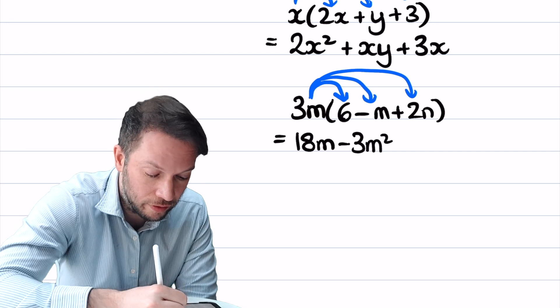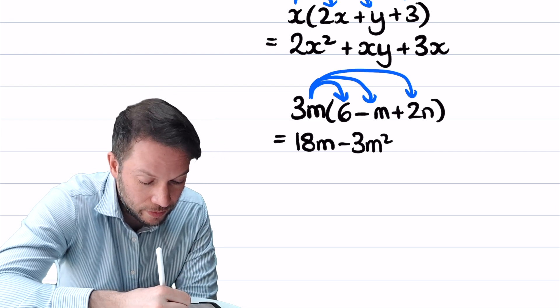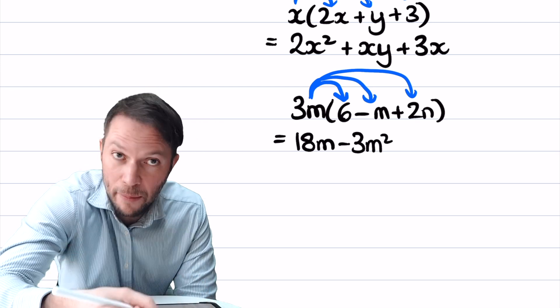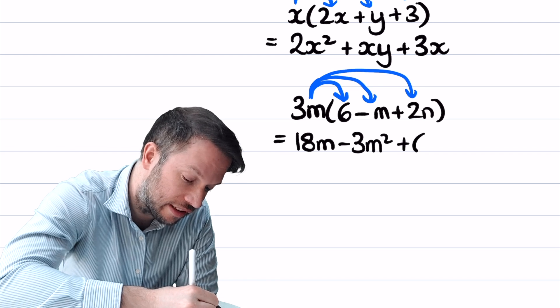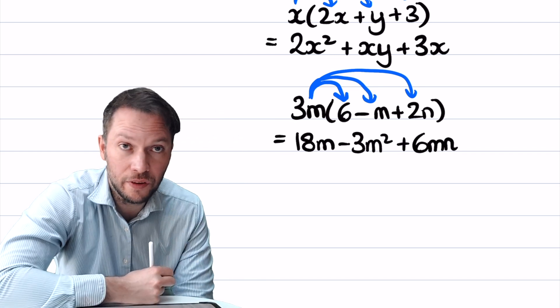And finally we've got the 3m times by the 2n. Now the m times the n is just mn, and then we've got the 3 times the 2, which is 6, so it's going to be plus 6mn, and that is the final answer. We'll see you next time.